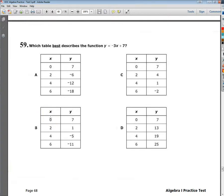Welcome, this is the end of course Algebra 1 practice test 3, question number 59. The question says, which table best describes the function y equals negative 3x plus 7?